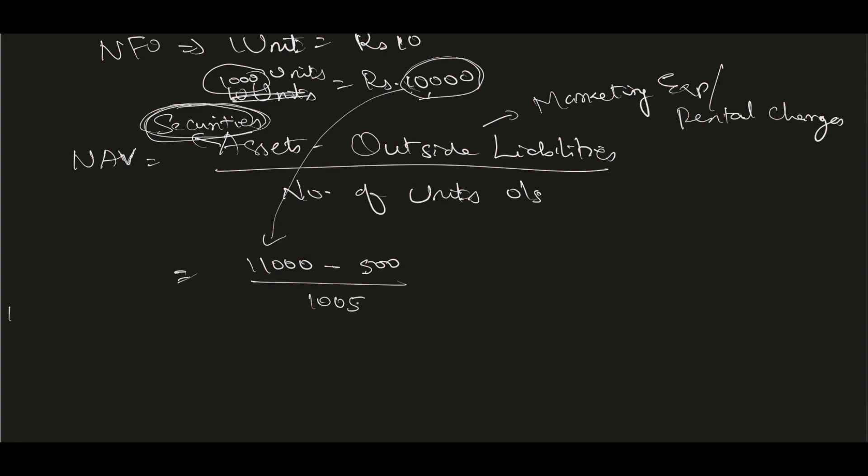Let's say it has gone to 1,005 units. So when you calculate this, it comes to 10.44. So this is the new price per unit or net asset value. Right now it is 10.44, so your 10 rupee unit has gone to 10.44 rupees per unit.